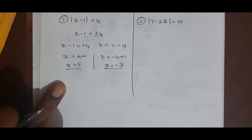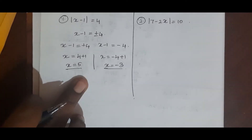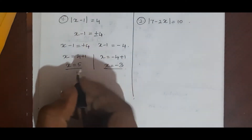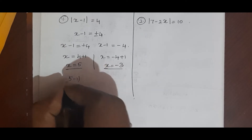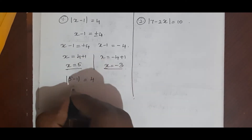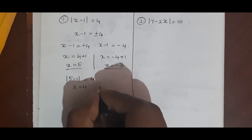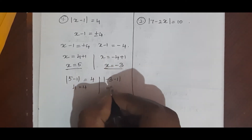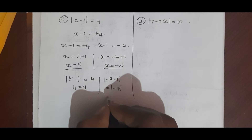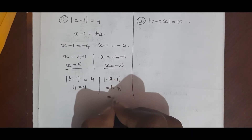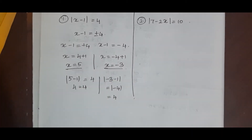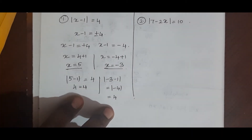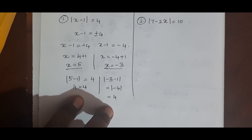We are not sure which value of x is correct, so let's verify by substituting in the given question. For x equal to 5: modulus of 5 minus 1 equals 4, which gives 4 equal to 4. For x equal to minus 3: modulus of minus 3 minus 1 gives modulus of minus 4, which equals 4. So both values are correct answers, and if either appears in the options we can select it.